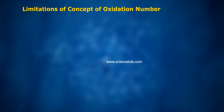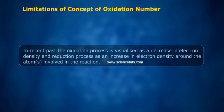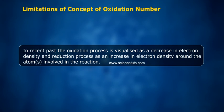Limitations of concept of oxidation number. In the recent past, the oxidation process is visualized as a decrease in electron density and reduction process as an increase in electron density around the atom involved in the reaction.